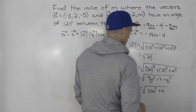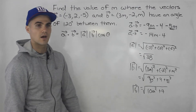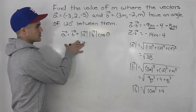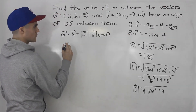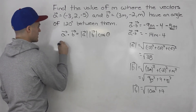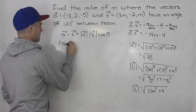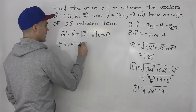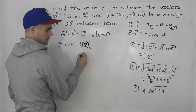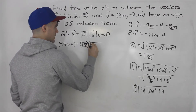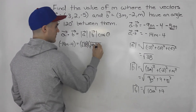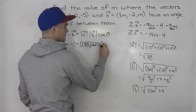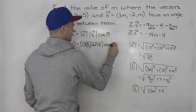Now that we have all of these expressions, we can plug them all into the dot product equation. So the dot product between a and b is negative 14m minus 4. That goes on the left side: negative 14m minus 4 equals the magnitude of a, which is root 38, times the magnitude of b, which is root of 10m squared plus 4. And the angle between these two vectors is 120 degrees, so this would be cos of 120.